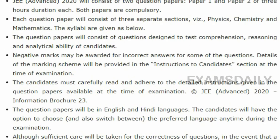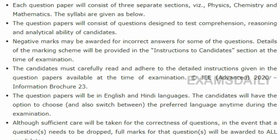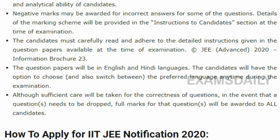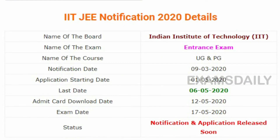JEE Advanced will consist of two papers — Paper 1 and Paper 2. Each paper consists of three parts: Physics, Chemistry, and Mathematics. The paper is designed to test comprehension, reasoning, and analytical ability of the candidates. Negative marks will also be awarded for incorrect answers.